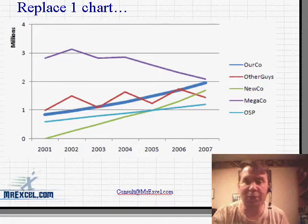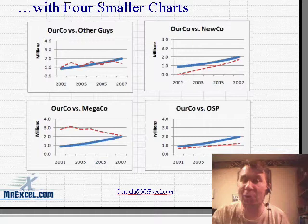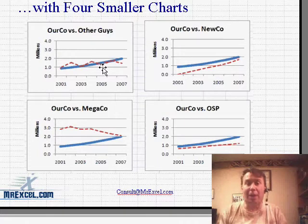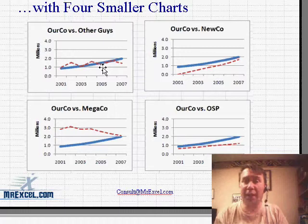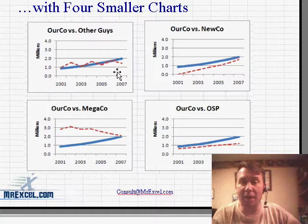A cool tip is to take that one chart and replace it with four smaller charts. Basically in every chart we're comparing our company versus one of the competitors, and that's really what people want to see — they want to see how we're doing versus each competitor.